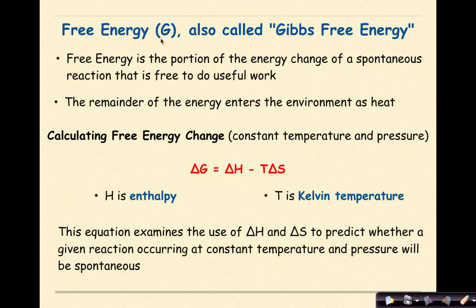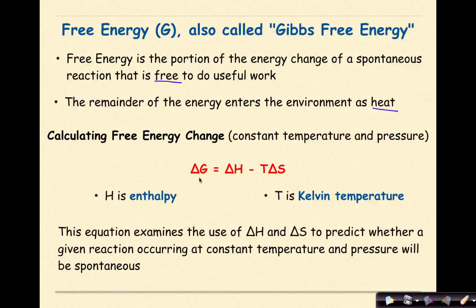Free energy, represented by the symbol G, is also called Gibbs Free Energy. Free energy is the portion of the energy change of a spontaneous reaction that is free to do useful work. The remainder of the energy enters the environment as heat. The formula we're going to use is delta G equals delta H minus T delta S, where H is enthalpy, T is Kelvin temperature, and S is entropy. This equation examines the use of change in heat and change in entropy to predict whether a given reaction at constant temperature and pressure will be spontaneous.